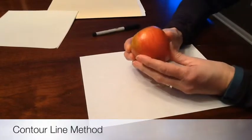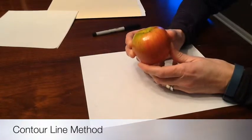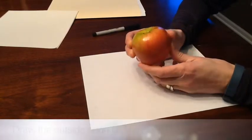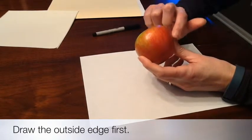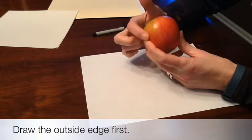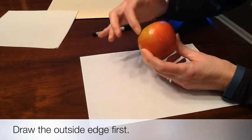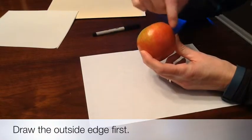All right, today we're going to draw an apple using contour line method. Remember, contour line method is drawing the outside edge of the object you're looking at and the interior details.